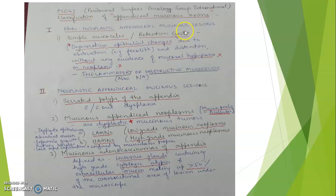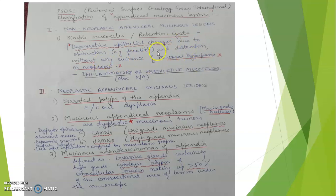The non-neoplastic appendiceal mucinous lesions include retention cysts or simple mucoceles. These are rare cysts. The characteristic feature is degenerative epithelial changes due to obstruction — for example, due to fecalith — with distension but without any evidence of mucosal hyperplasia or neoplasia. They are also known as inflammatory or obstructive mucoceles.